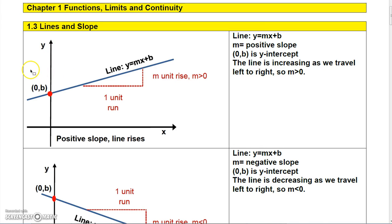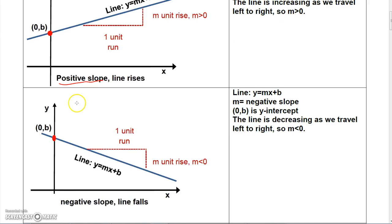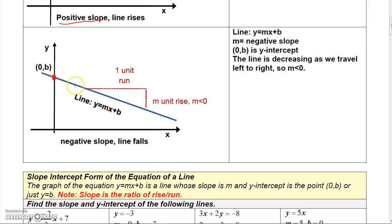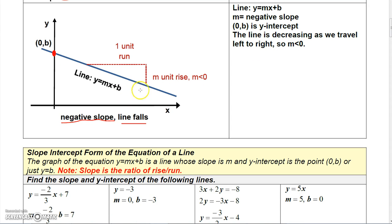In this section we're going to talk about lines and slope. This line here is increasing as you go left to right, which means you have a positive slope. This line decreases, so you have a negative slope — when the line falls as you go left to right, you have a negative slope. If the line was horizontal like the x-axis you would have a slope of zero, and if it was vertical like the y-axis you would have no slope.